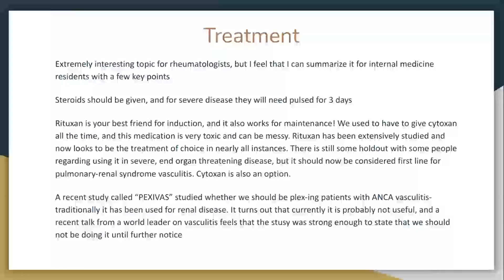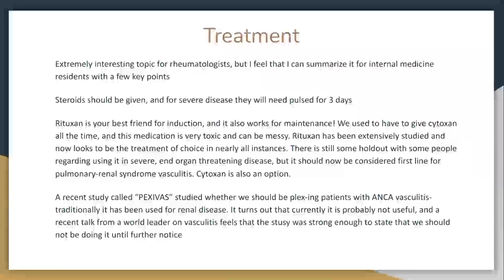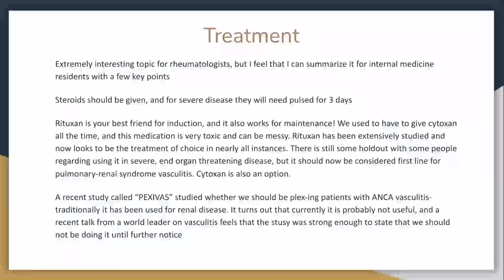I think I can boil treatment down to key points that you can remember, and you'll feel pretty empowered when it comes to treating ANCA vasculitis. Steroids should be given, and for severe disease we're often going to pulse these for three days and then wean. Steroids, steroids, steroids are important. But Rituxan — also known as Rituximab, a CD20 inhibitor — works very strongly for induction and also works for maintenance. You can leave people on Rituxan for a while after induction and they do very well.